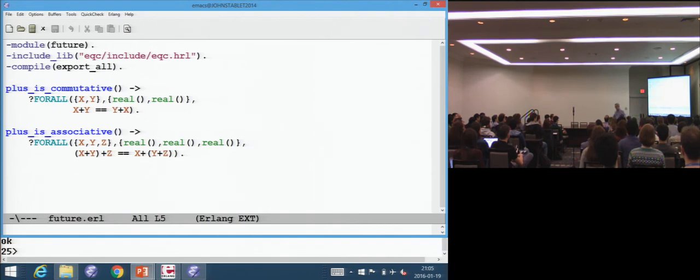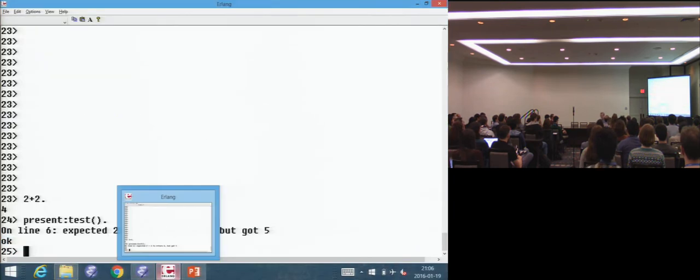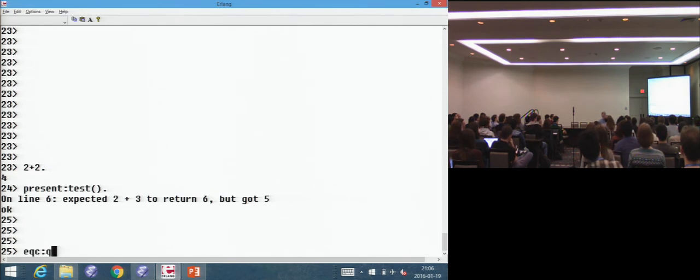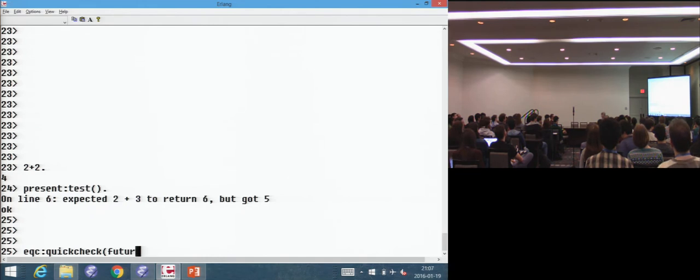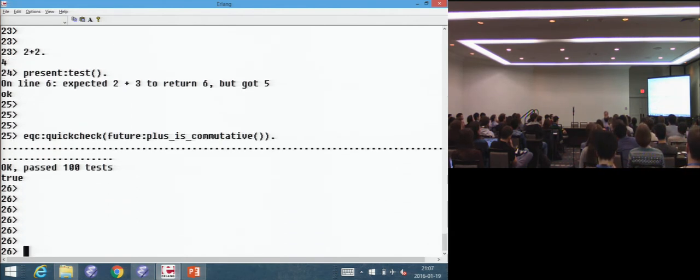Plus is associative. And I shall take my general properties and call my testing tool, QuickCheck. And check, is plus commutative? Yes. A hundred tests say that it is.